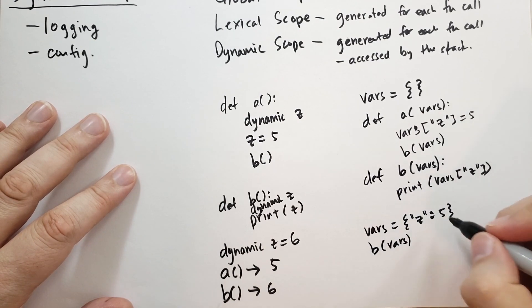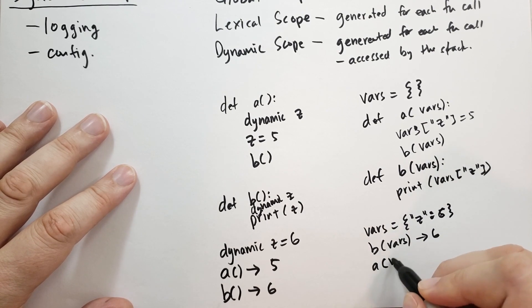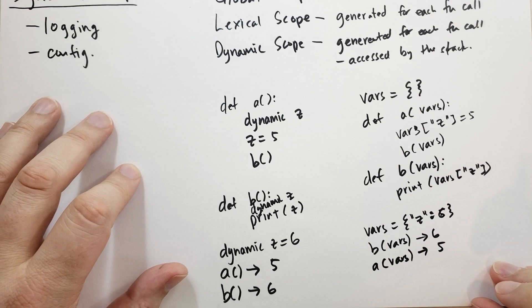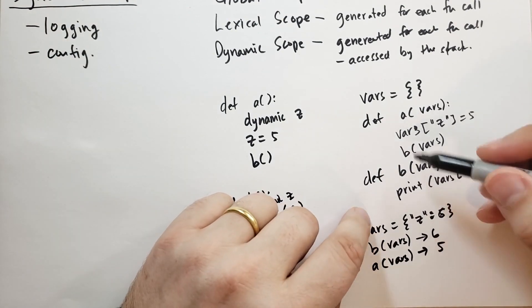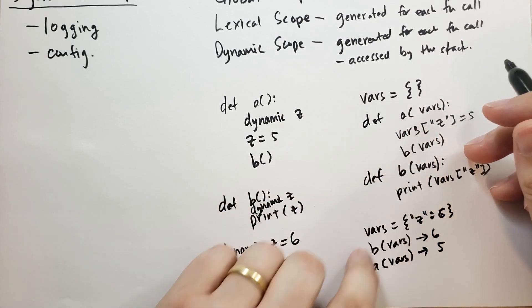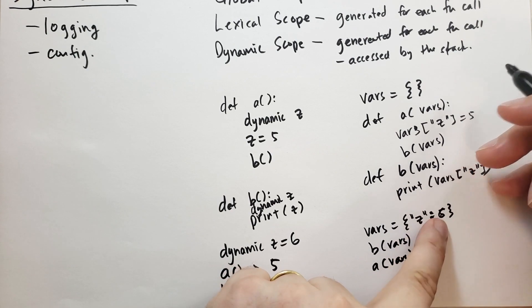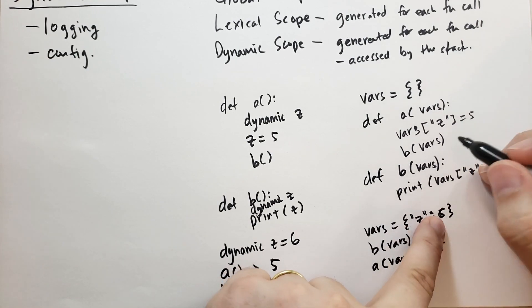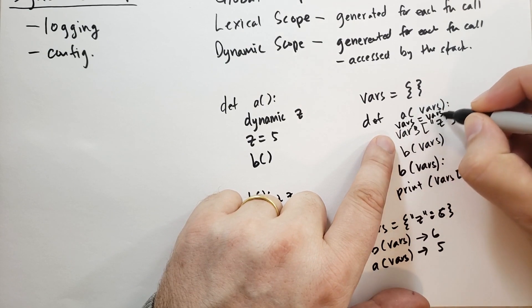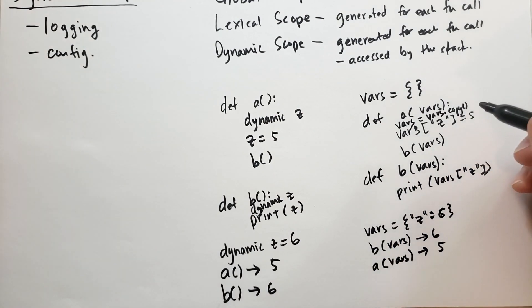And then when you call b with the vars, let's do the 6. When you call b with the vars, it's going to print 6. And when you call a with the vars, it's going to print 5. The difference here, however, is this isn't quite right because this vars actually overwrites the z. And so now, after it's called a, vars has been changed to 5. The z has been changed to 5. So you might have to do something like vars is equal to vars .copy, so you're not modifying the vars that were passed in.